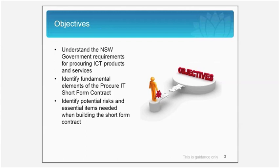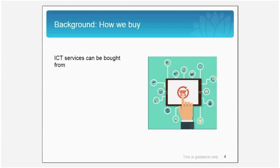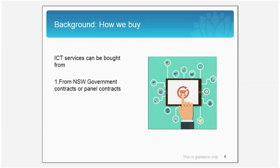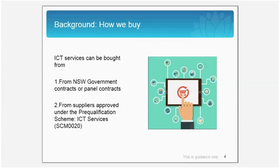A bit of background on how we buy. NSW Government agencies can buy ICT services by engaging in either of two ways: the NSW Government Contract or Panel Contracts, like the Whole of Government Hardware Contract 999, or from suppliers approved on the ICT Services Scheme, Scheme 0020.